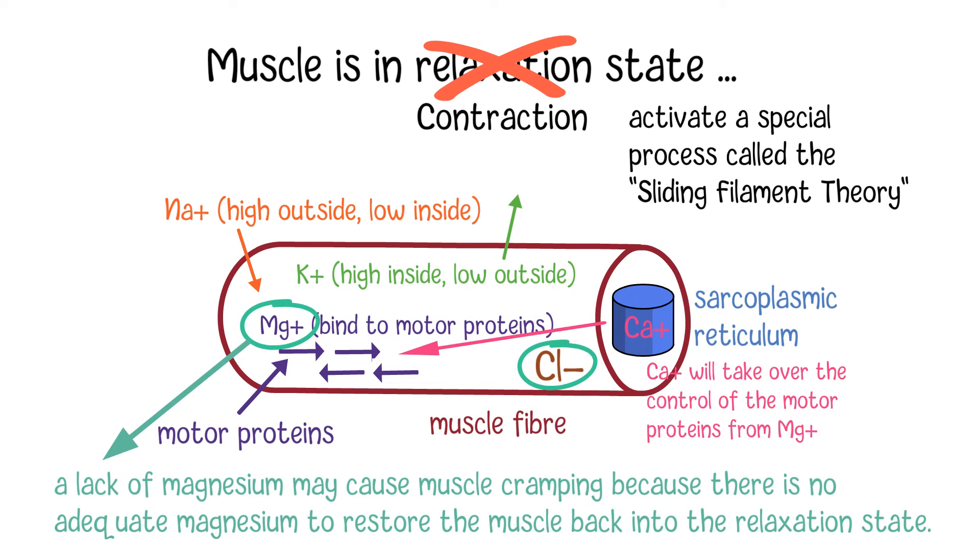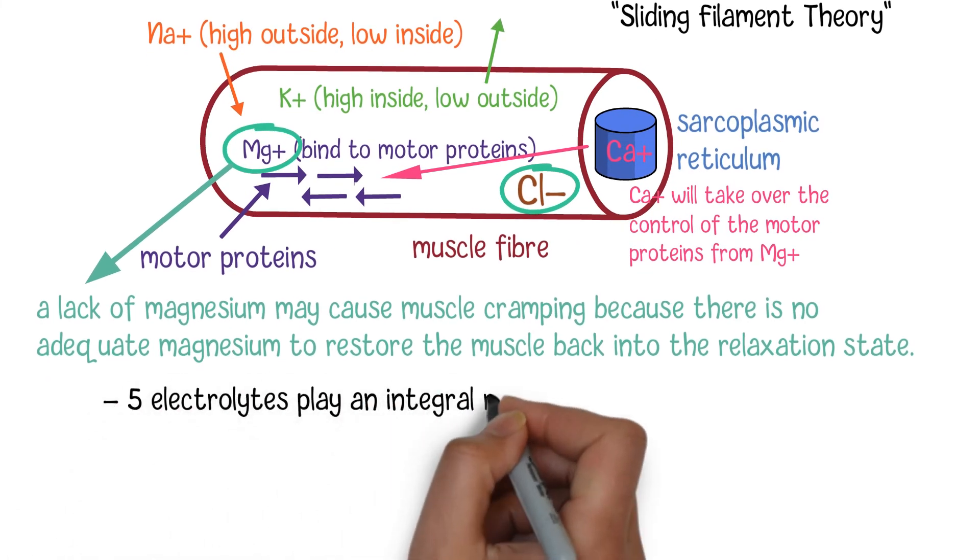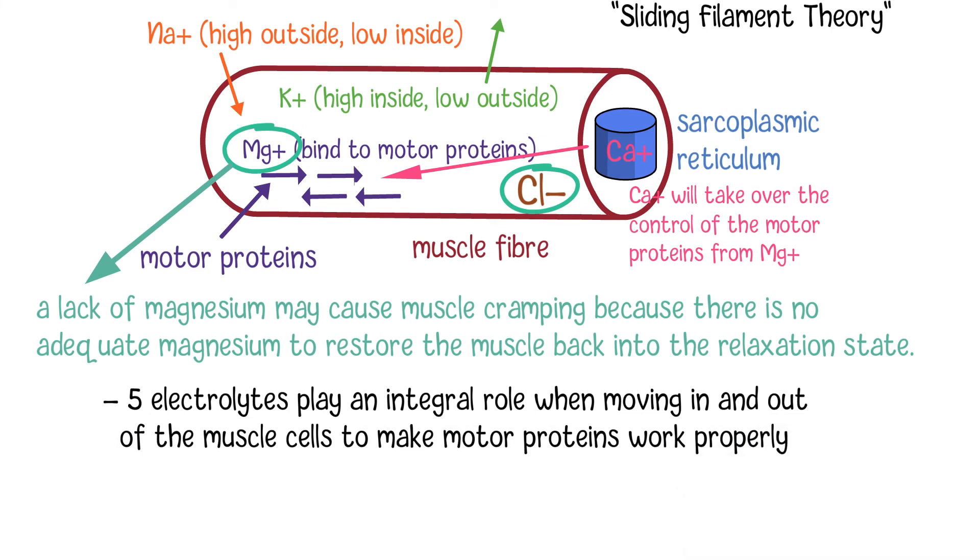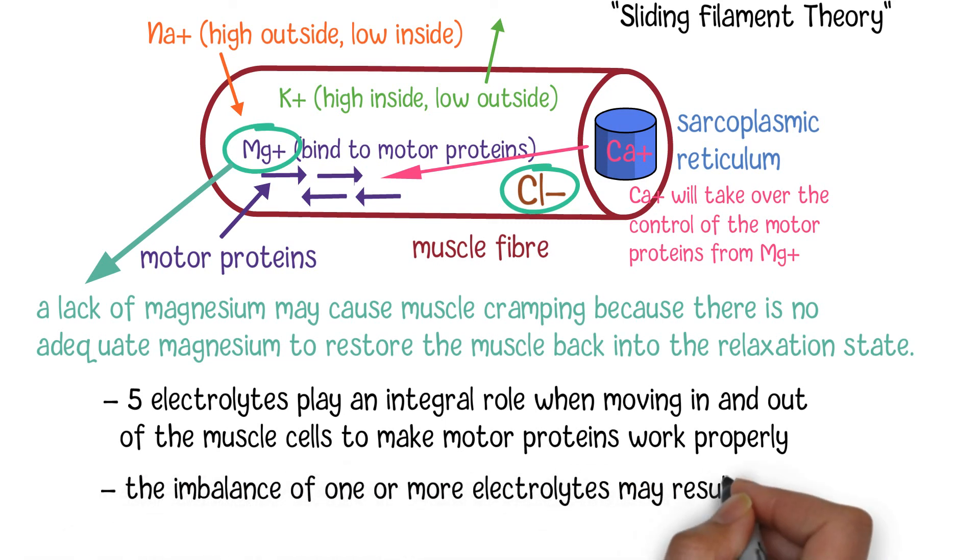From the contraction and relaxation procedures, we can see each of the five electrolytes play an integral role when moving in and out of the muscle cells to make motor proteins work properly. We need to pay more attention to the loss of electrolytes as heat and sweat increase, as the imbalance of one or more electrolytes may result in poor sporting performance and some serious health consequences in severe cases.